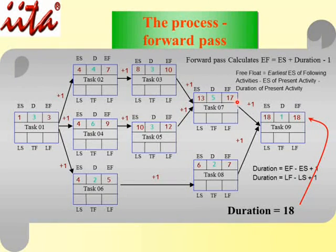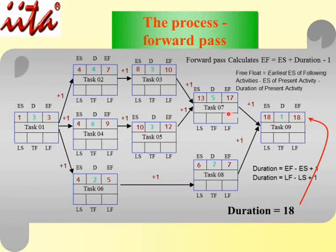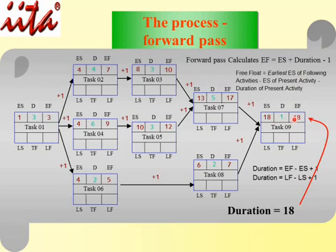This path ends at month 17, so the next task takes off on month 18. The other path ends at month 7, which would suggest starting month 8 — but since both must complete, we take the higher value of 18. Applying the formula: ES = 18, Duration = 1, so EF = 18 + 1 − 1 = 18. Therefore, the total duration of this project is 18 months.